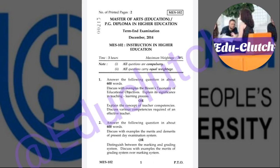The first question has two choices. The first choice is: discuss with examples Bloom's taxonomy of educational objectives and explain its significance in the teaching-learning process. Or, explain the concept of teacher competencies and discuss various competencies required of an effective teacher.